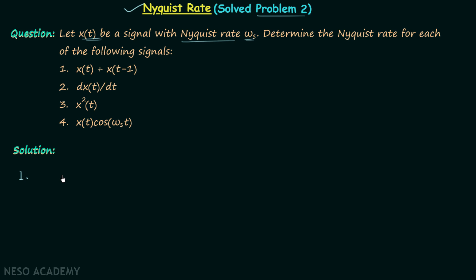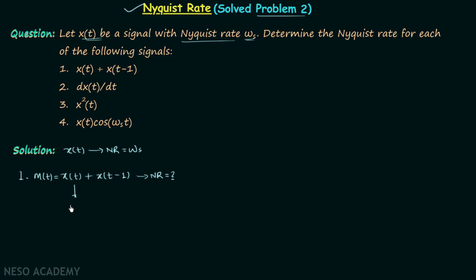The first signal is x(t) + x(t-1), so m(t) = x(t) + x(t-1). We are required to calculate the Nyquist rate of this message signal. It is given that x(t) has Nyquist rate equal to ω_s. Therefore x(t-1) will also have Nyquist rate equal to ω_s, because x(t-1) is obtained by performing time shifting on x(t), and there is no effect of time shifting on the Nyquist rate.